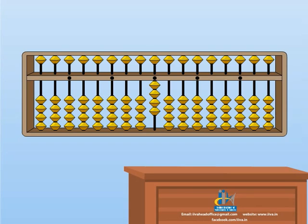For adding and subtracting, if we want to add any number, we will take that number towards the value bar. And if we want to subtract, we will take away that number from the value bar.